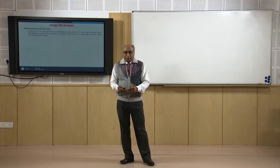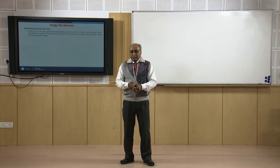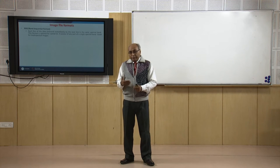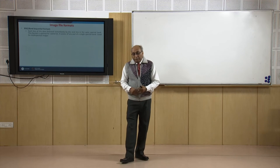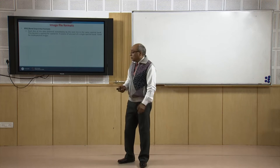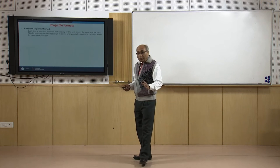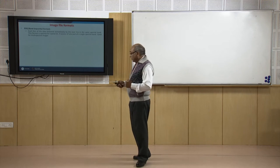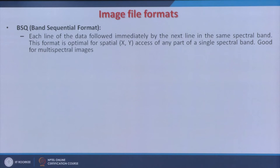There are a few image formats followed worldwide. Many images available on the internet free of cost, like Landsat images, are already georeferenced. If not, we can do georeferencing as well. The three most popular raw formats are: first, BSQ — Band Sequential Format — where each line of data is followed immediately by the next line in the same spectral band, meaning band-by-band formatting.